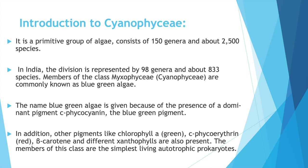The name blue-green algae is due to a dominant pigment known as C-phycocyanin, which is the blue-green pigment. In addition, other pigments like chlorophyll A (a green pigment), C-phycoerythrin (a red pigment), beta-carotene, and different xanthophylls are also present.